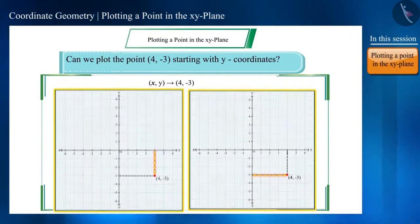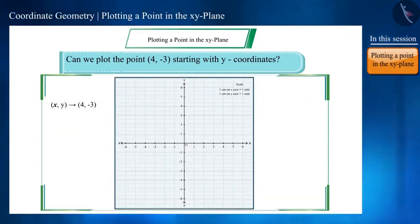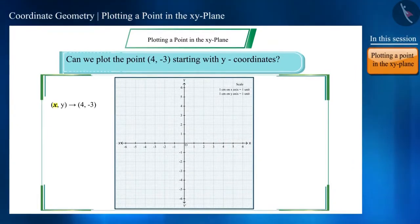Apart from these, you can find the points using another method too. Here, we will draw a line parallel to the Y axis from X coordinate that is 4. And likewise, draw a line parallel to the X axis from the Y coordinate that is minus 3. These lines intersect at a point and that is the expected point (4, -3).